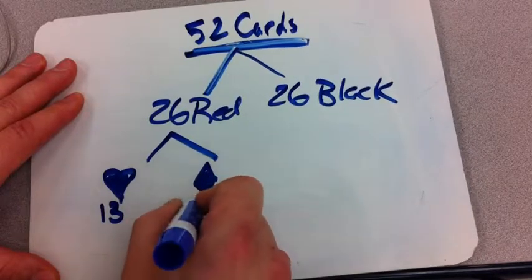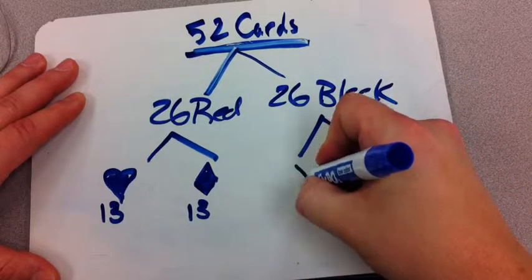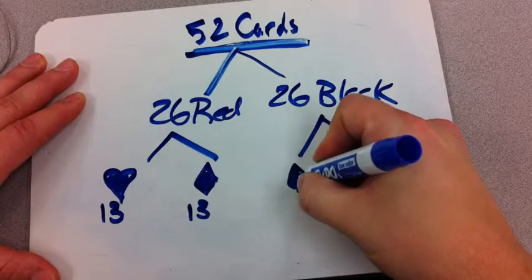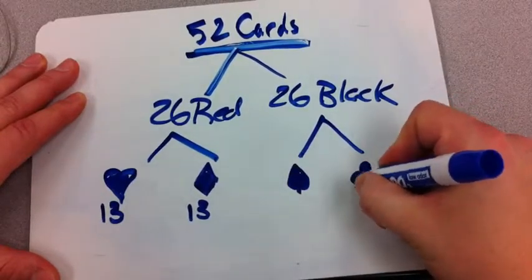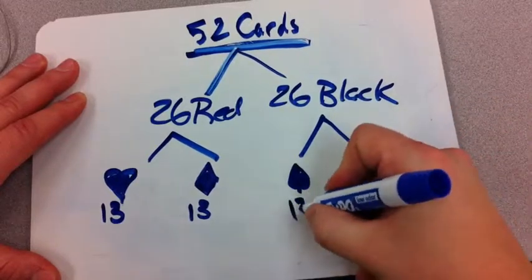I have 13 of those. The black cards can be split into spades, which look like upside down hearts. And clubs, which look like clovers. And I have again 13 and 13.